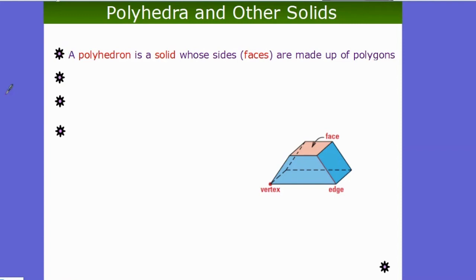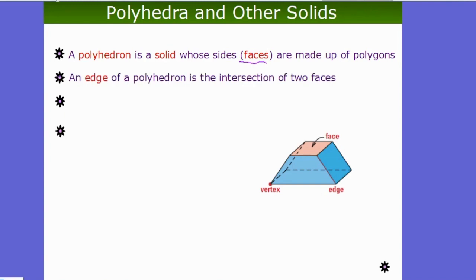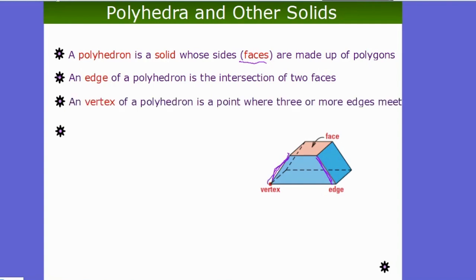A polyhedron is a solid whose sides are made up of polygons and we call these sides faces. An edge of a polyhedron is the intersection of two faces — that's just where two faces meet up. A vertex is a point where the edges all meet into one spot. We use 'vertices' when talking about more than one.